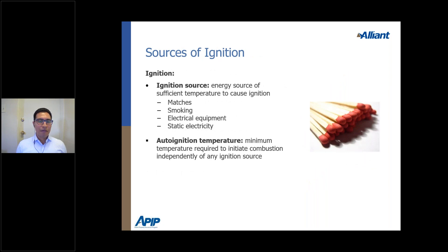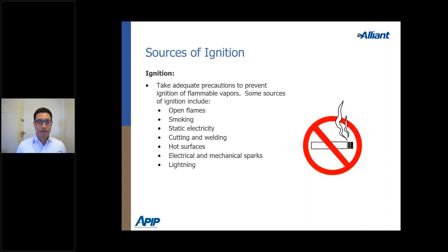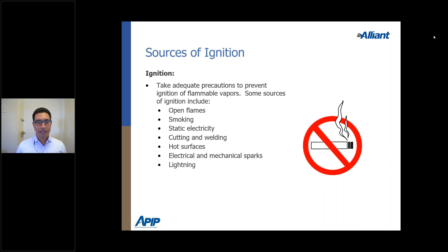Other sources of ignition include anything that emits fire or heat sufficient to cause ignition: matches, smoking, electrical equipment, static electricity, open flames, cutting and welding, hot surfaces, electrical and mechanical sparks, and lightning. The goal is to ensure any activity with potential for open flames or these hazards is isolated from flammable liquids and gases. We don't want these activities happening in close proximity to flammable or combustible liquids that could lead to a fire or explosion.